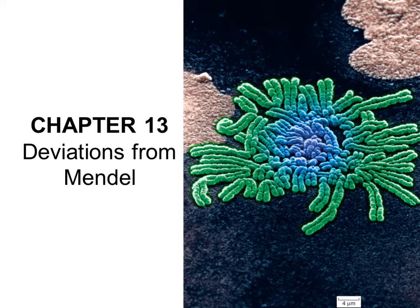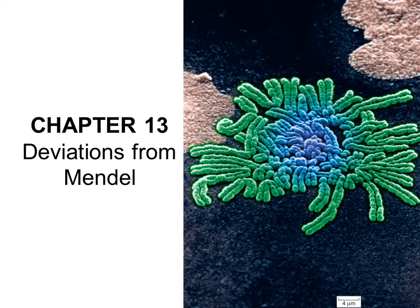In this module, we're going to talk about some of the deviations from Mendel's predictions. Mendel studied a very basic, or very simple system, in which the genes express in the way he predicted, and they were also located on different chromosomes, or at least they are sorted independently.